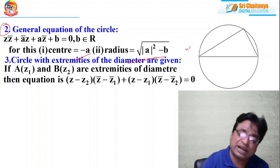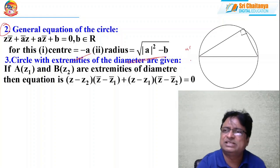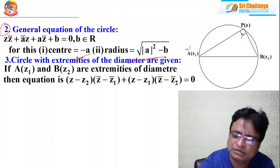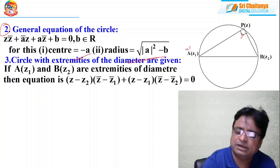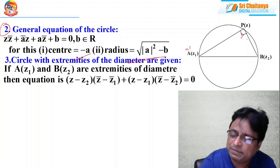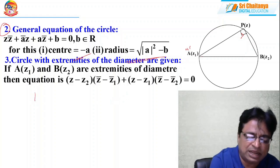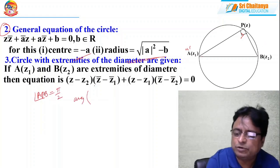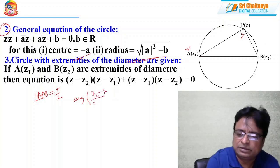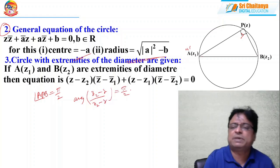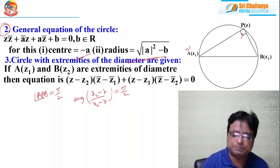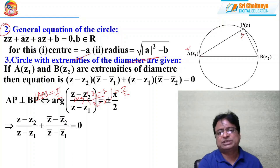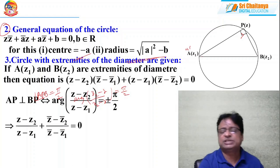The proof is straightforward. Since AB is a diameter, the angle APB = 90°. Using the rotation technique, argument of (z₂ − z)/(z₁ − z) = ±π/2 (plus or minus because we don't specify clockwise or anticlockwise direction). Whenever the argument of a complex number is π/2, the number is purely imaginary, so z + z̄ = 0. Applying this and simplifying gives the required equation. The sign ±π/2 accounts for both orientations.